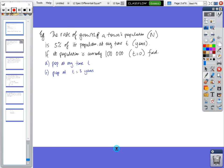Most rate questions are with respect to time. Okay, so we're going to work our way through some examples. The rate of growth of a town's population n is 5% of its population at any time t measured in years. If the population is currently 100,000 when t equals zero,